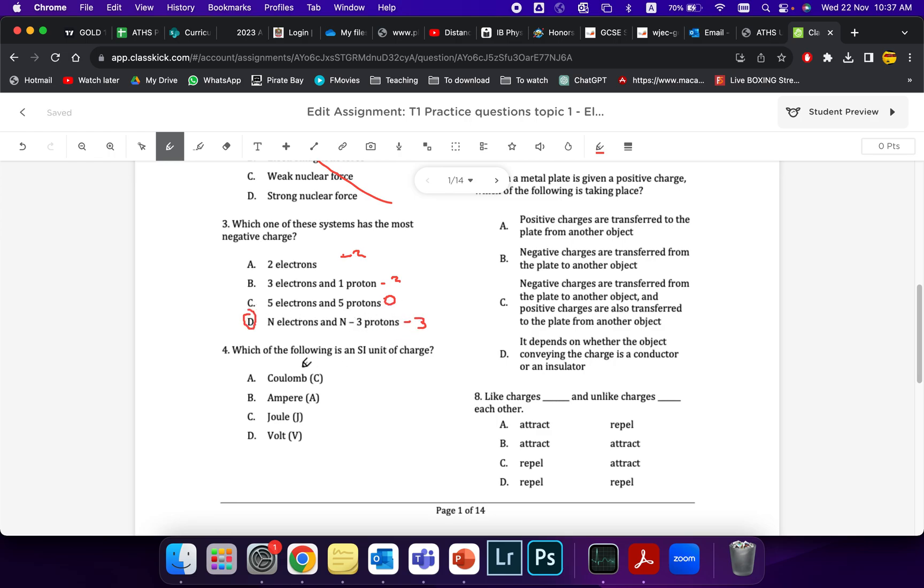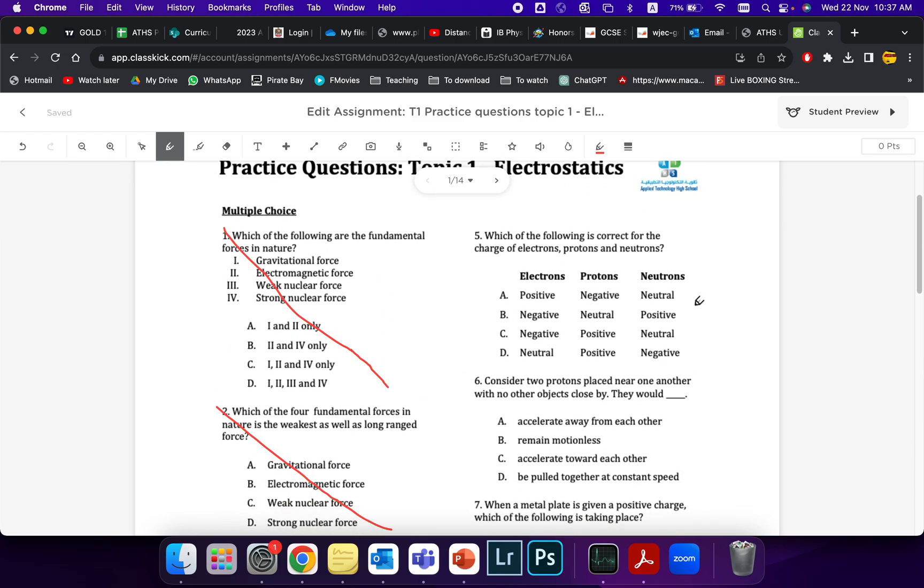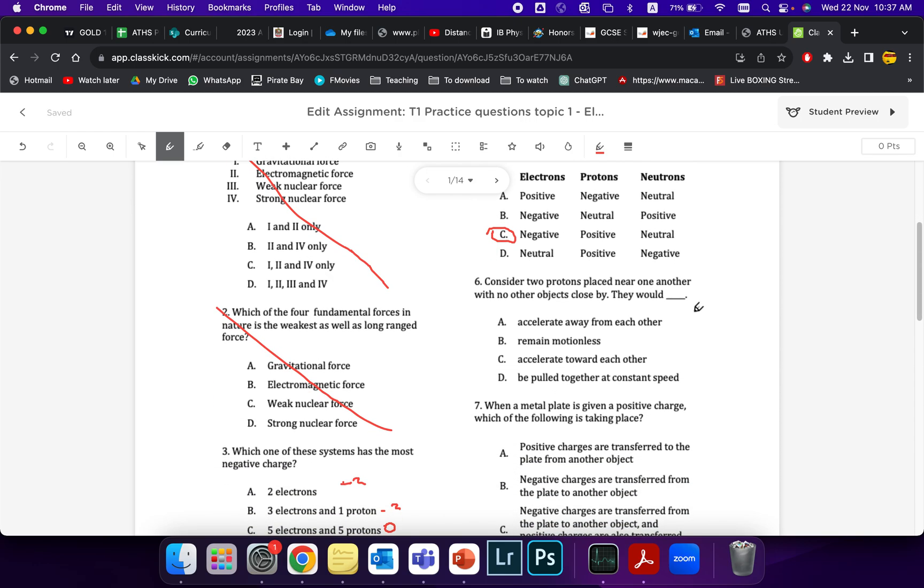The unit for charge we, of course, know is Coulomb. Over here, which of these is correct charges? This is basic stuff. Hopefully everybody understands electrons are negative, protons are positive, neutrons are neutral. That should be pretty easy.